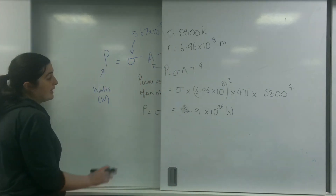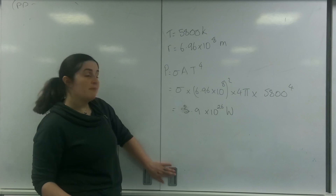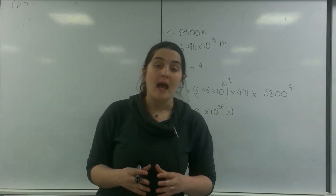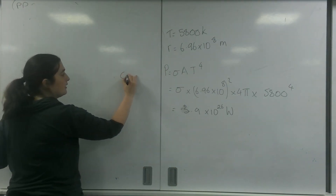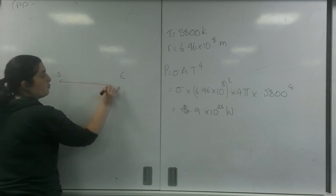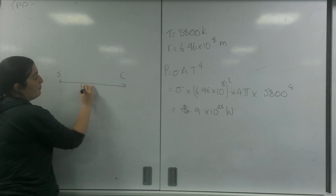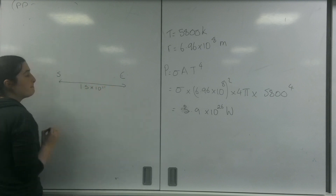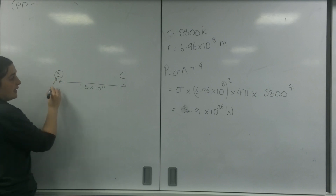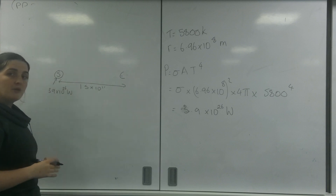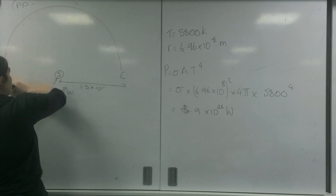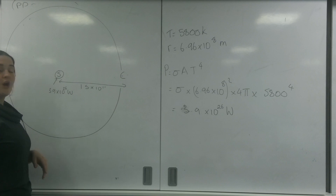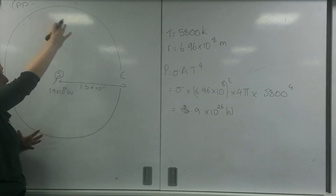I'm going to take this value — the amount of power the star releases — and imagine that here's the sun and here is the Earth, one astronomical unit apart, or 1.5 times 10 to the 11 meters. I know at the surface of the sun it emits 3.9 times 10 to the 26 watts. I now want to take the same amount of power but spread it over a sphere that could encompass our Earth.